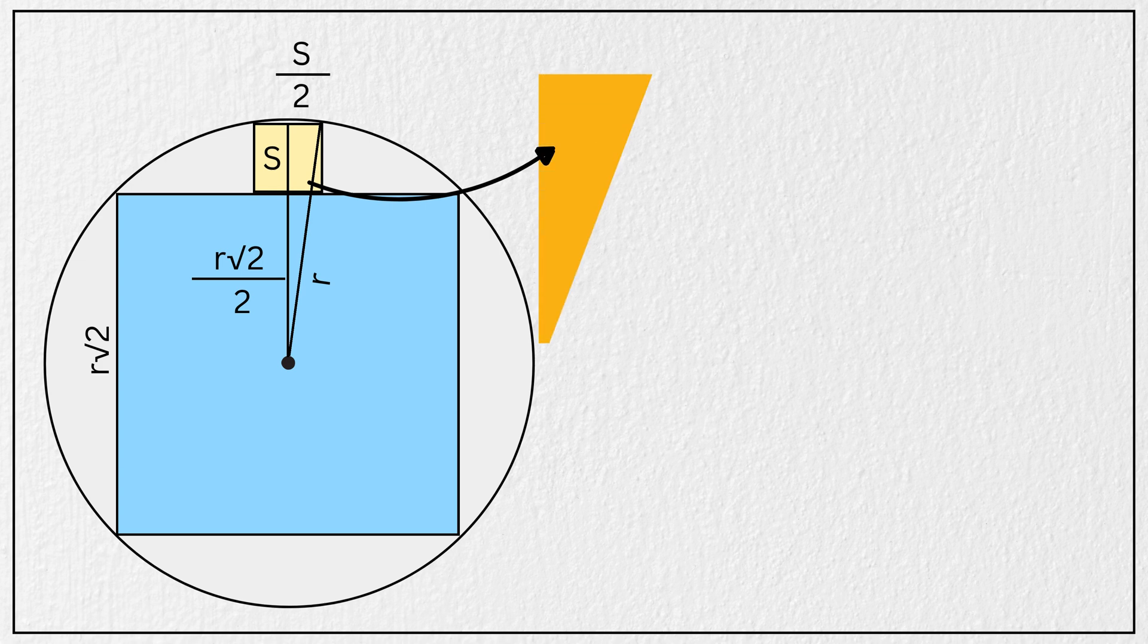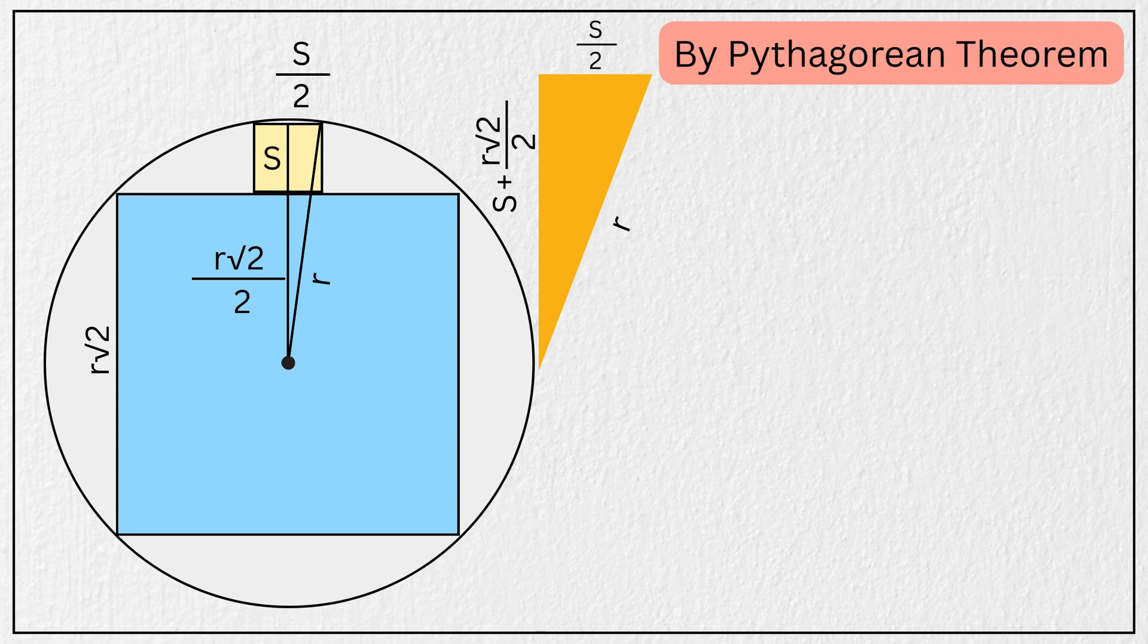Now focus on this right-angled triangle formed between this half side of small square, perpendicular line, and the radius of the circle. One leg of this triangle is s divided by two. Other leg is s plus r times the square root of two divided by two, and hypotenuse as radius r. Now using the Pythagorean theorem, we get the quantity s divided by two squared plus the quantity s plus the r times the square root of two divided by two squared is equal to r squared.